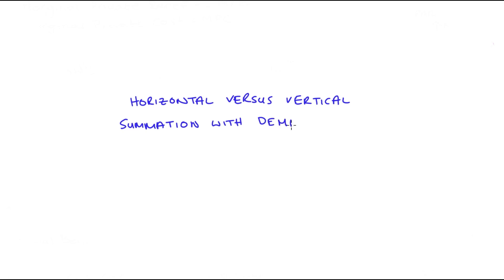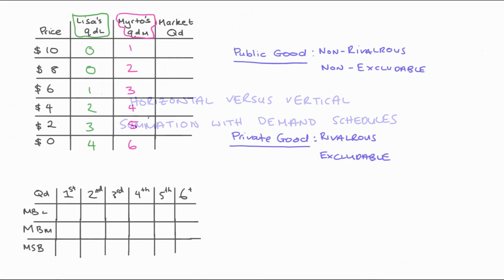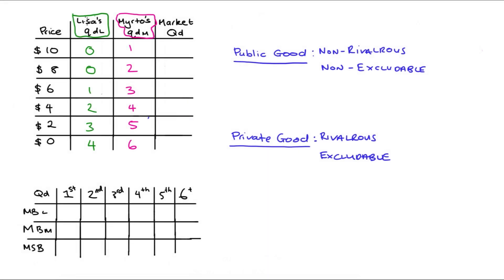Hi everyone. In this video I'm going to look at horizontal and vertical summation when we have demand schedules — so when the information that we have is in a table. On the screen I've got Lisa's demand schedule and Murthal's demand schedule, just for some arbitrary good I haven't specified what.